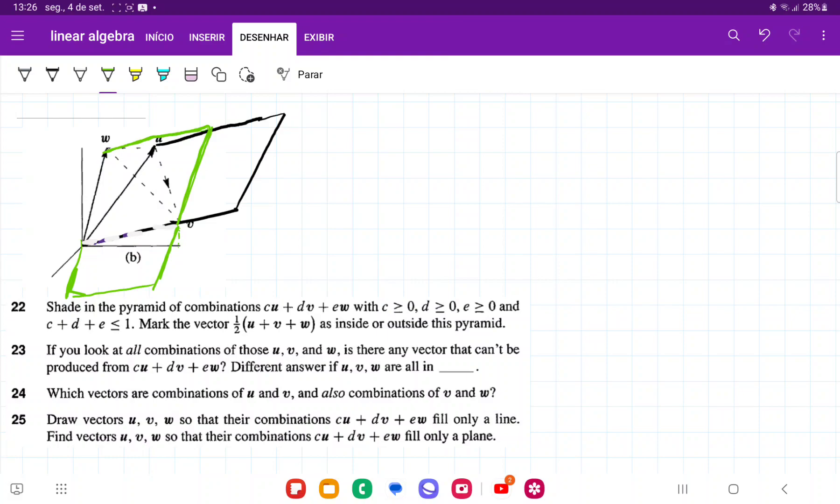So these planes have nothing in common. There are no vectors that are combinations of u and v that are also combinations of v and w. Actually, the only possible way that they intersect, the only line that they intersect is this line here, which is the v, right? Because that's the only thing that they have in common.